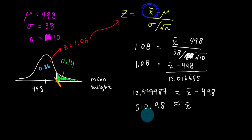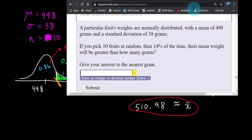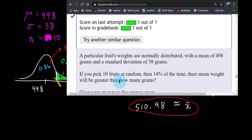So let's go type that into the answer field and see that it's correct. 510.98. And it says to answer to the nearest gram. So since 510.98, I'm going to enter 511. That's delightful.